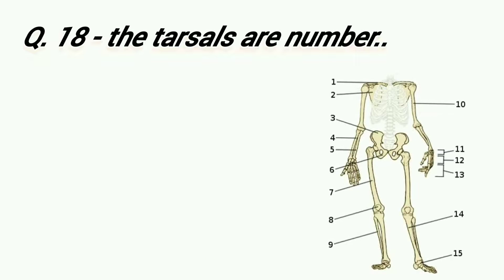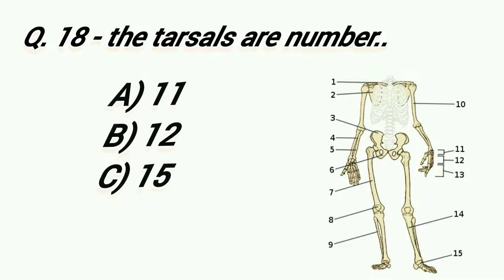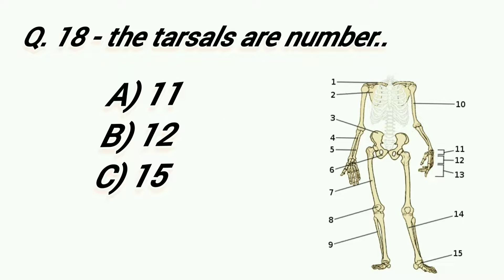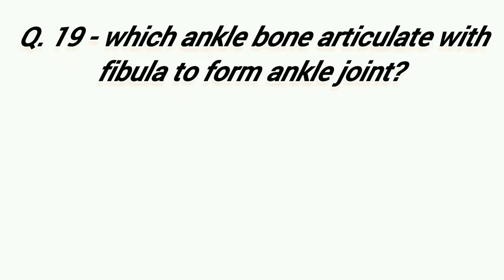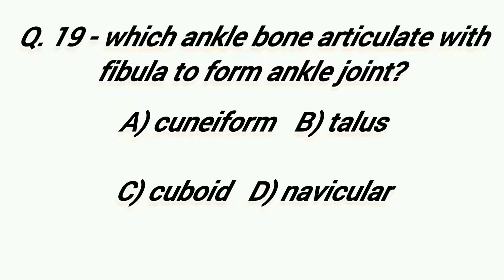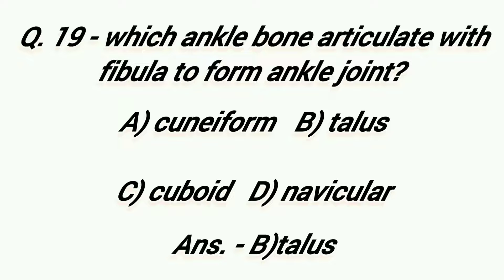The tarsals are numbered: Option A: 11, Option B: 12, Option C: 15. Right answer is Option C, 15. Which ankle bone articulates with the fibula to form the ankle joint? Option A: Cuneiform, Option B: Talus, Option C: Cuboid, Option D: Navicular. Right answer is Option B, Talus.